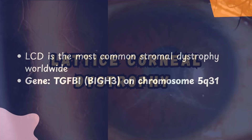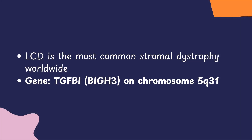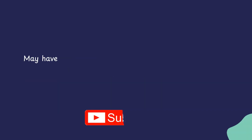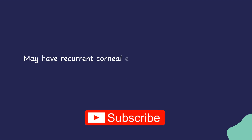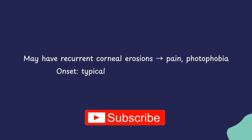Lattice corneal dystrophy is the most common stromal dystrophy worldwide. It is caused by mutations in the TGF-β1 gene, also known as the Big H3, located on chromosome 5q. Patients usually present in the first or second decade of life, and a typical history includes recurrent corneal erosions which cause pain and photophobia.